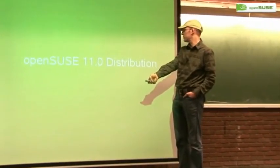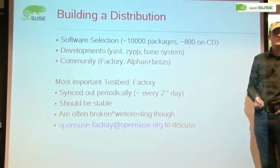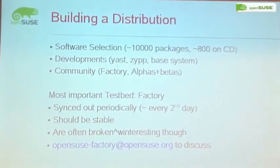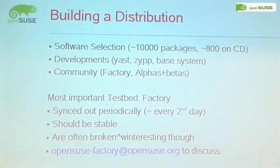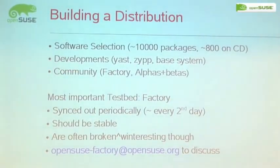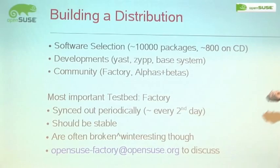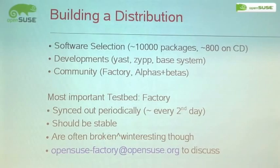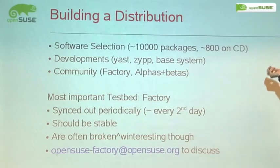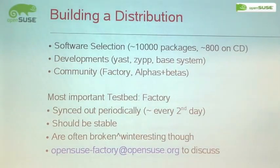Let's start with the distribution introduction. What makes a distribution a distribution? The toughest part really is picking from all this great open source software. We have in our factory tree roughly 10,000 packages — RPMs in our case — and we can only put around 800 on the CD. Of course, one of them is OpenOffice, but it's still less than a percent of packages on the CD.